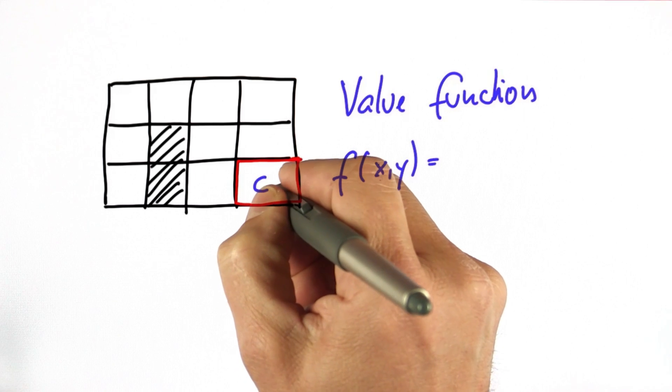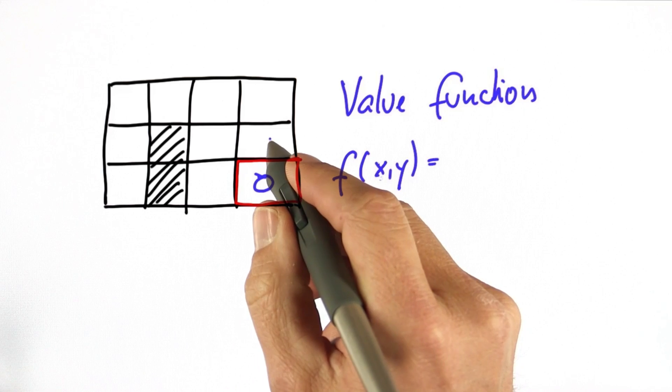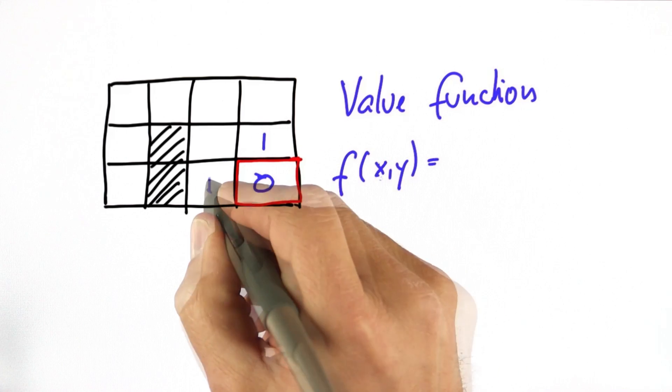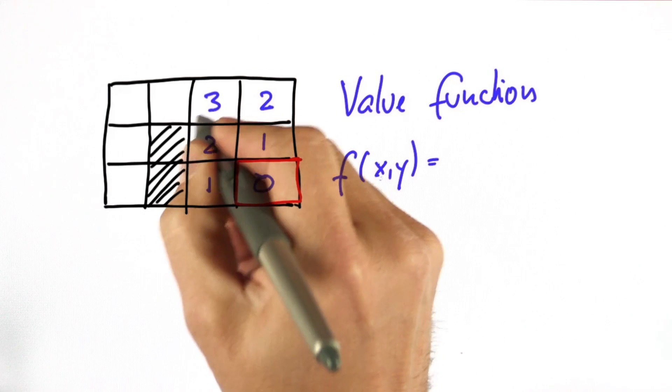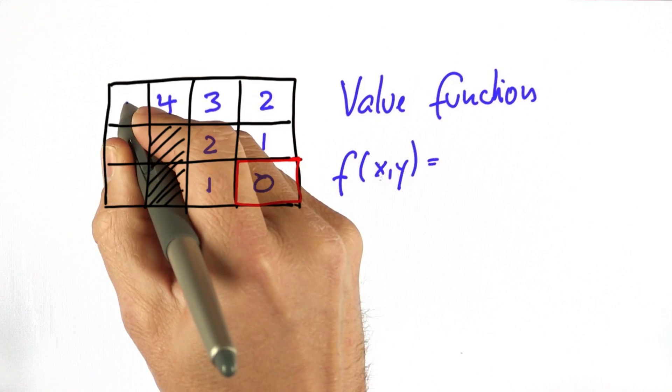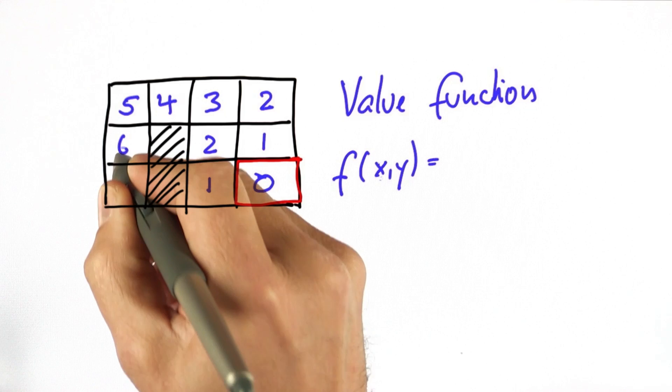For the goal, obviously, it's 0. For each adjacent cell to the goal, it ought to be 1. For the guys over here, 2, 3, 4, 5, 6, and 7.